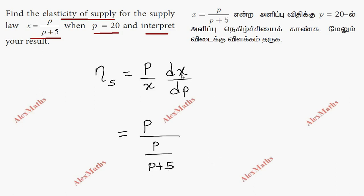Now dx by dp: we use the quotient rule. So u dash v minus u v dash by v squared. In the numerator we have p, and v in the denominator is p plus 5.